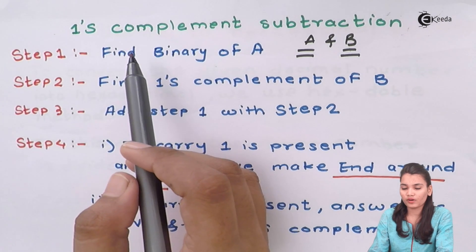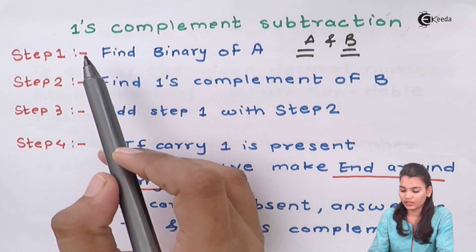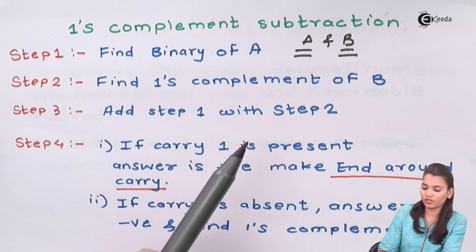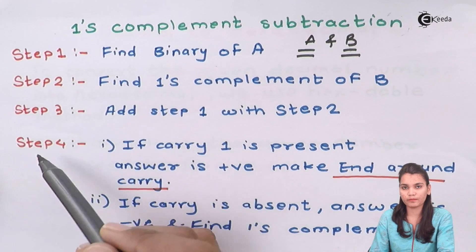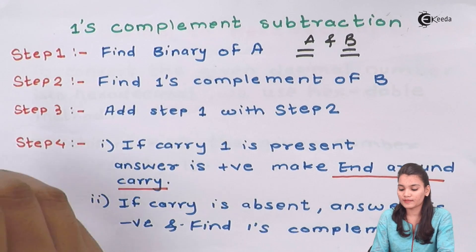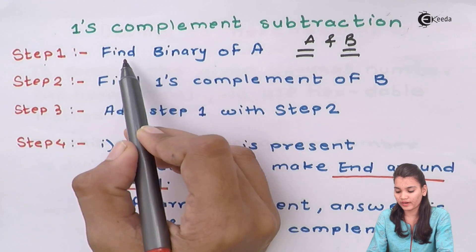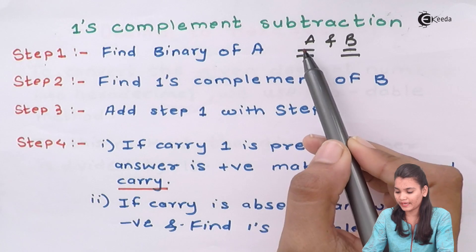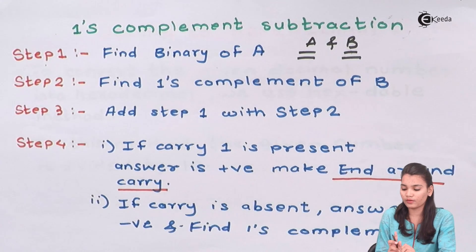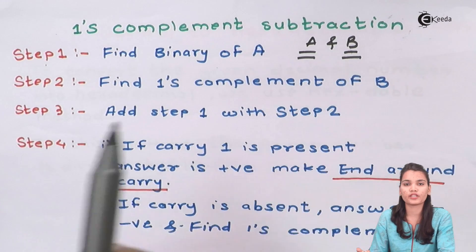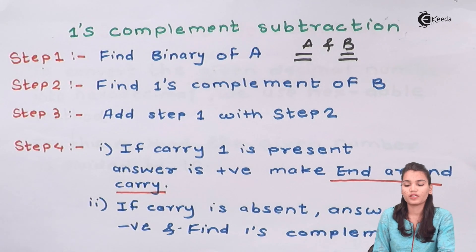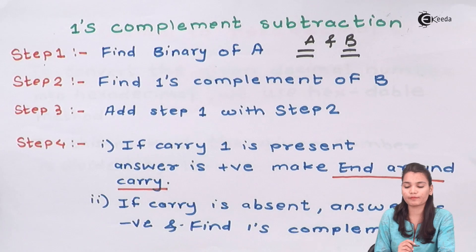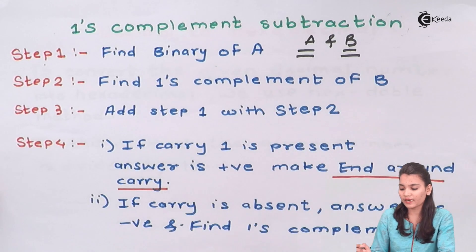So far we have seen the binary addition and subtraction rules. Now we are going to see what we mean by the one's complement subtraction method. I am going to tell you the different steps to perform the subtraction. We have two numbers, number A and number B. The first number will be A and the second number will be B.